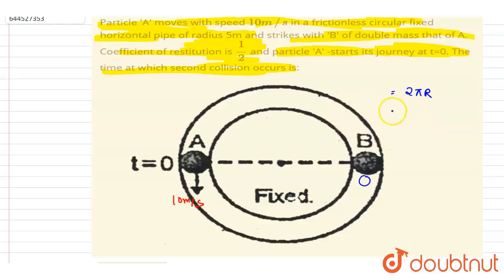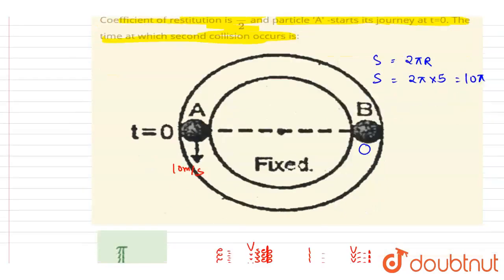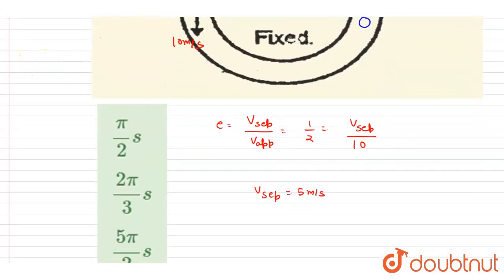the whole circumference length, it is 2π times 5, so it is 10π. And the separation velocity is 5, so I will write down the time taken for second collision. It equals the